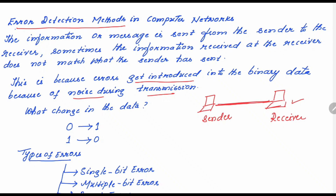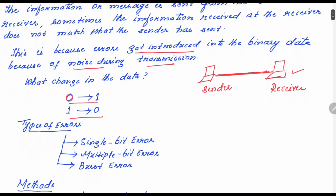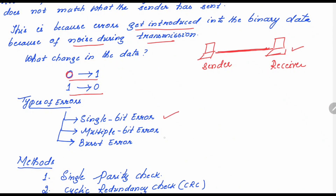During transmission there is a possibility that the data gets corrupted. For example, suppose the data sent from the sender side is 0 1 0 0 1 1. A bit 0 in the data can get changed to 1, or a 1 can get changed to 0. To categorize these types of errors, we have single bit error, multiple bit error, and burst error.